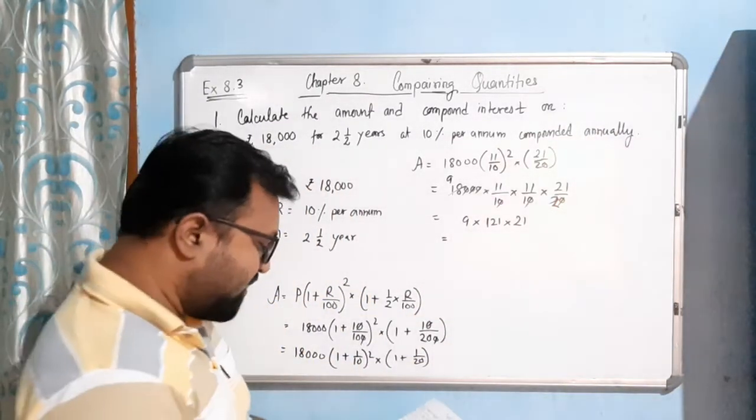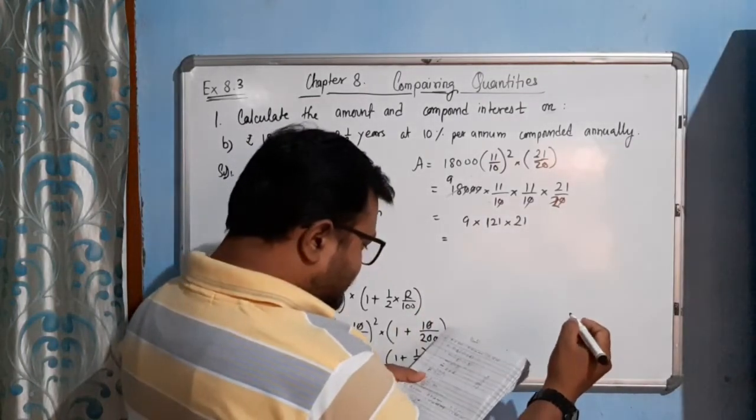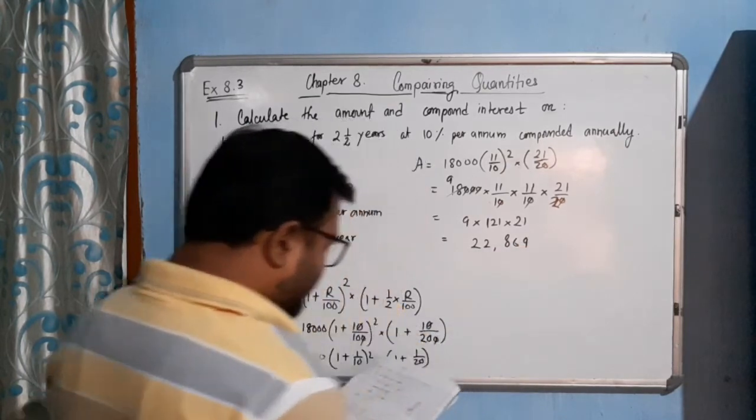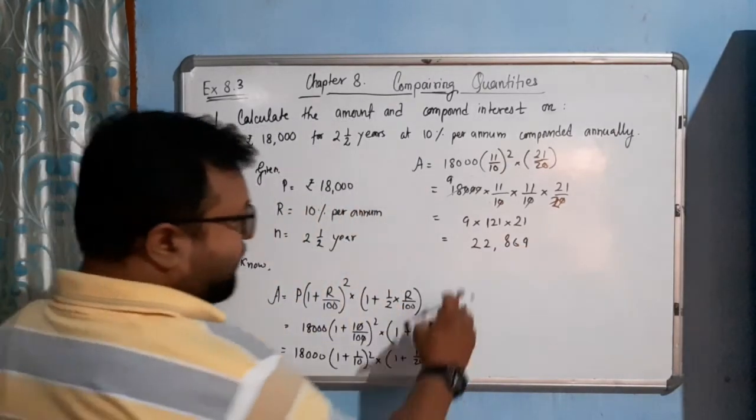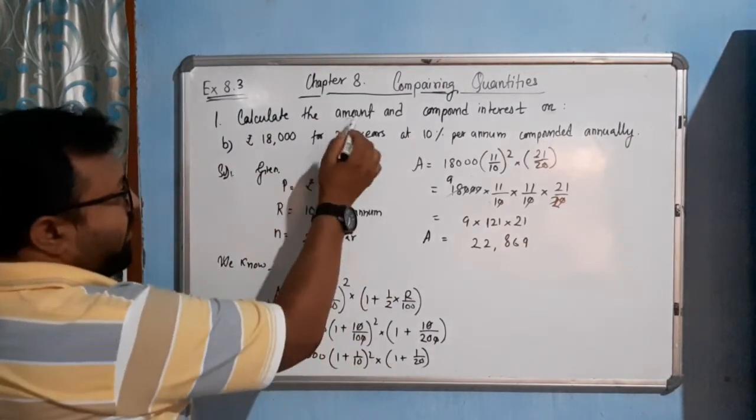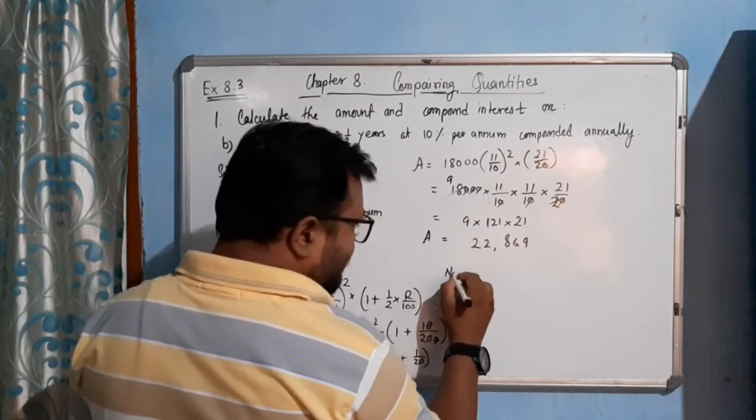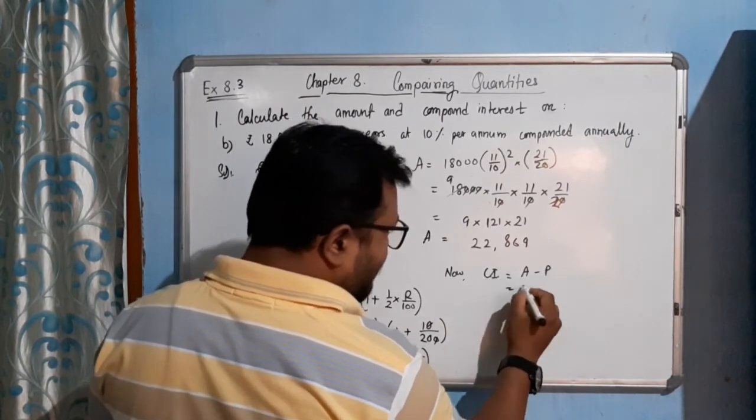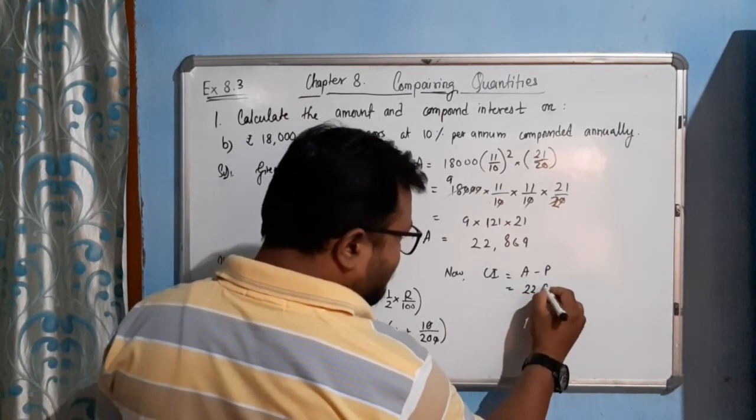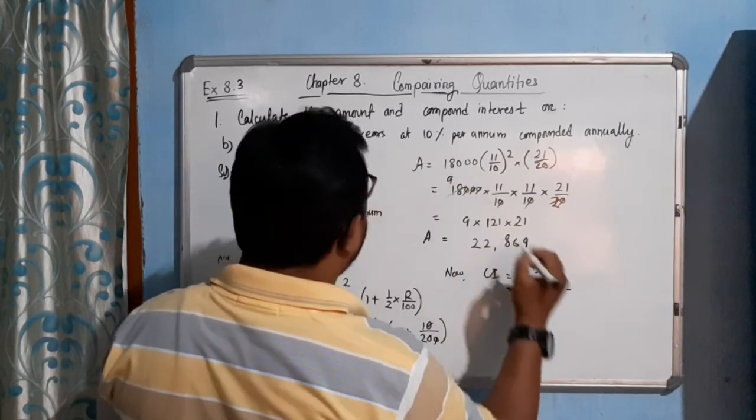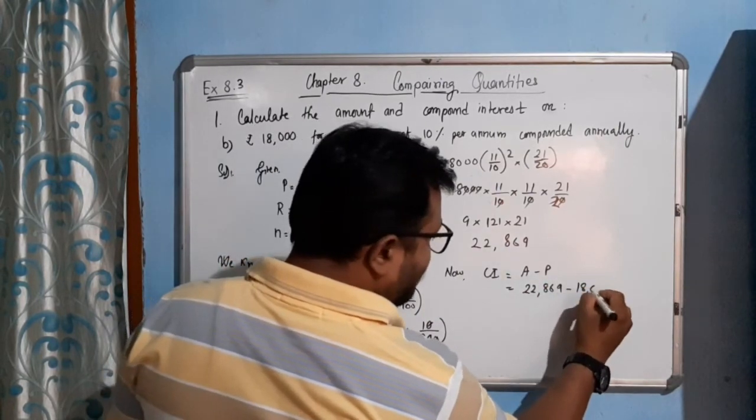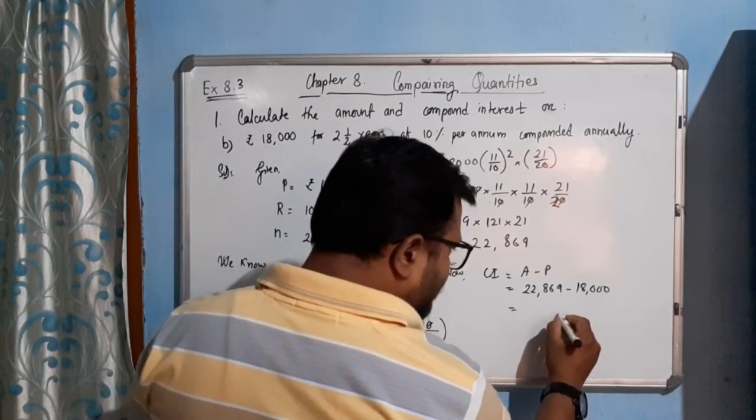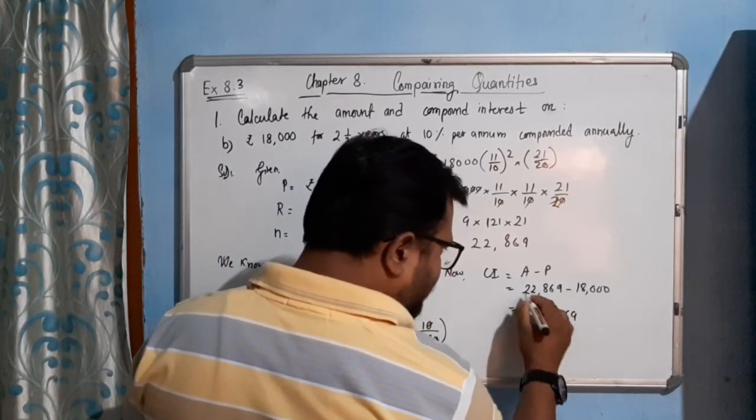It equals how much? ₹22,869. So our amount is ₹22,869. We got our amount. Now for compound interest, CI equals A minus P. A is ₹22,869 minus P is how much? ₹18,000. So how much are you getting? ₹4,869.